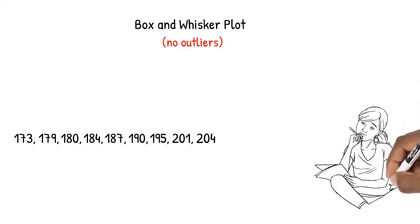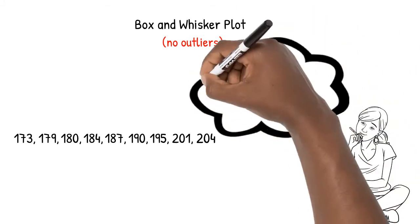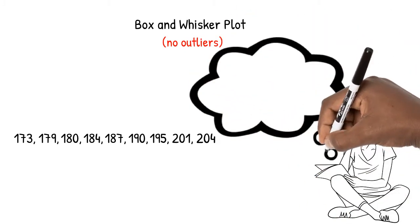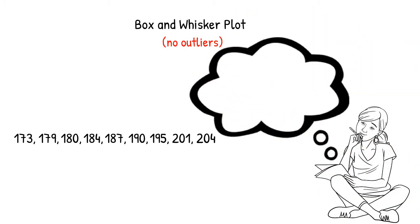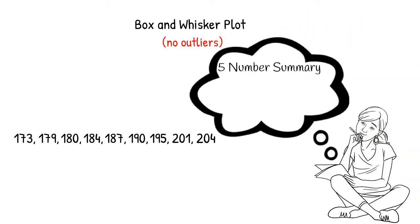In this video, we will look at how to draw a box and whisker plot when we don't have any outliers. In a previous video, we looked at the weights of 9 men and found the 5-number summary. We will need these 5 values in order to draw our box and whisker plot, so let's do a quick review.